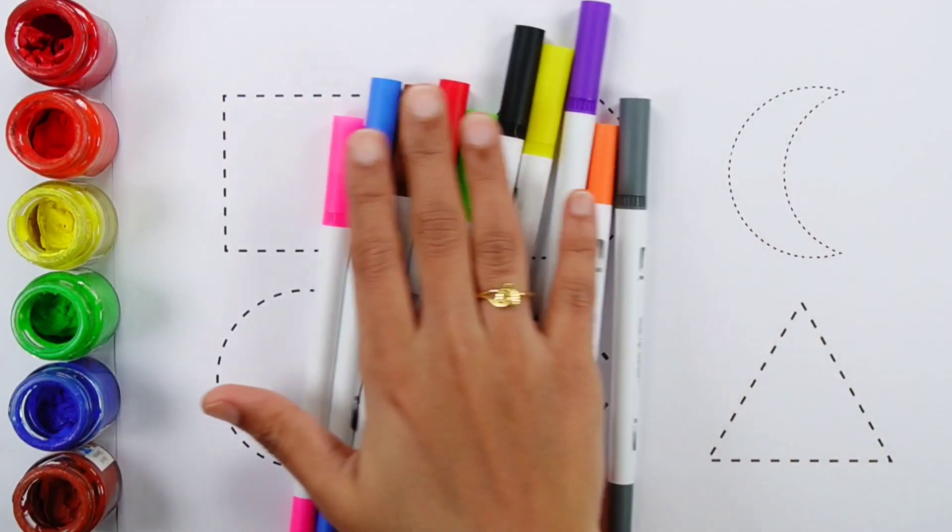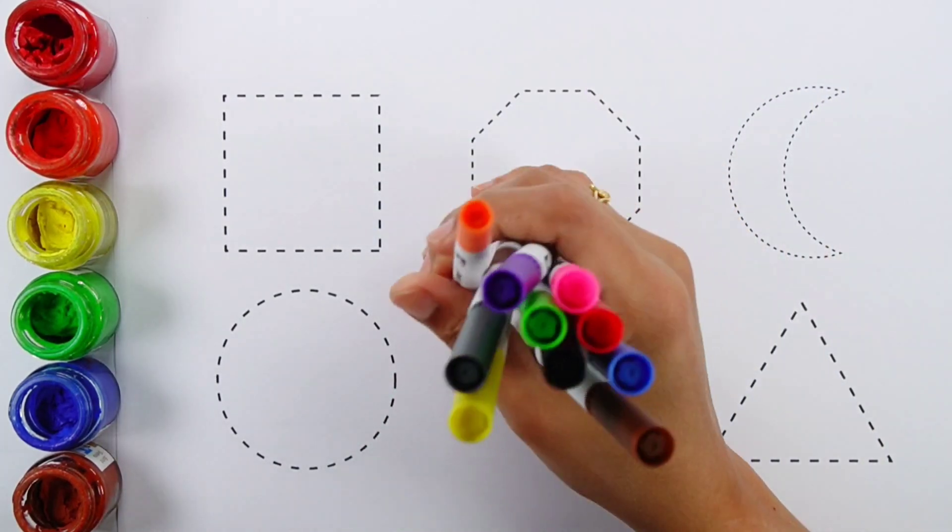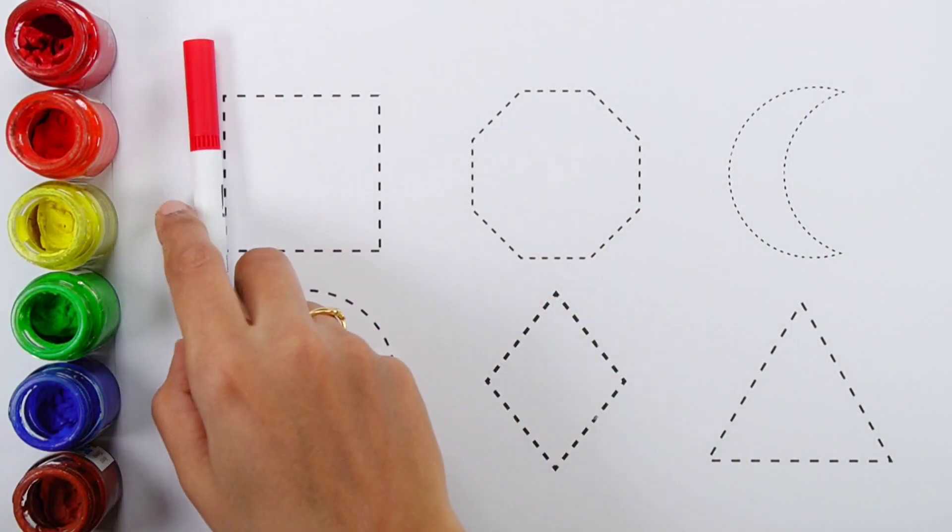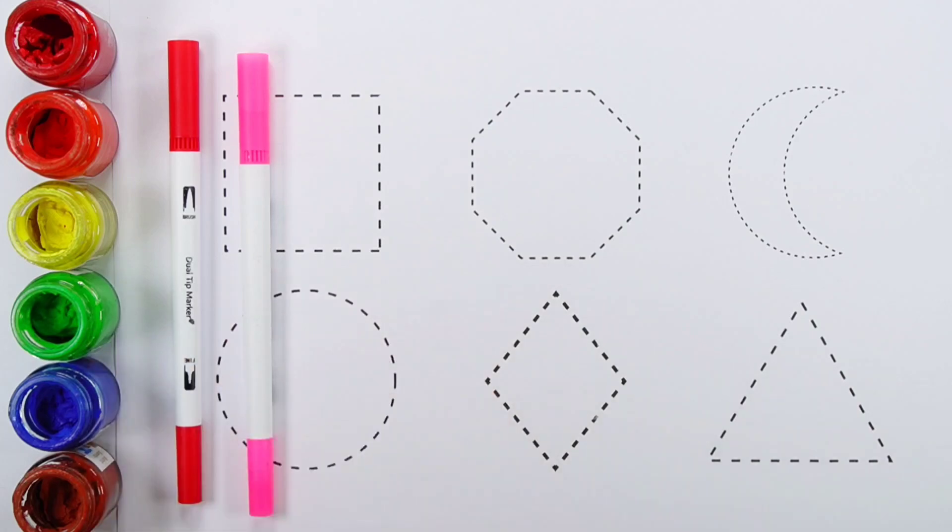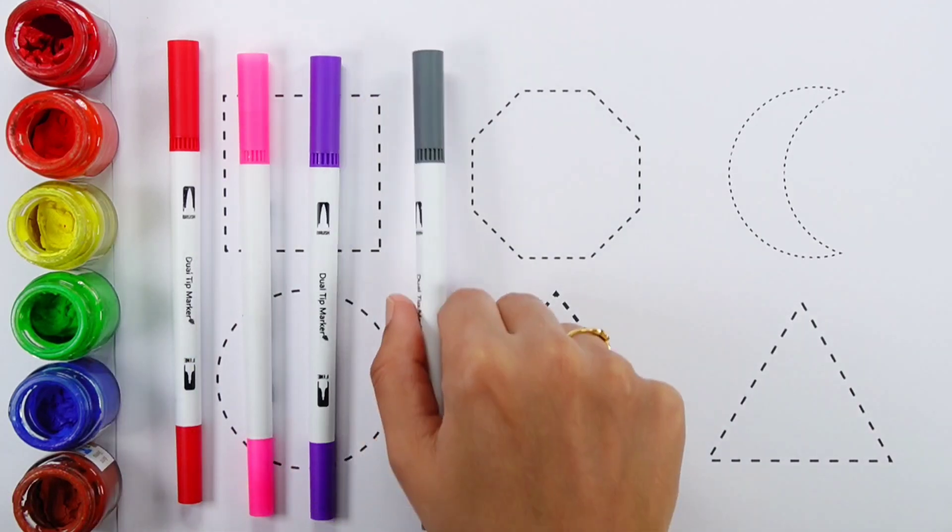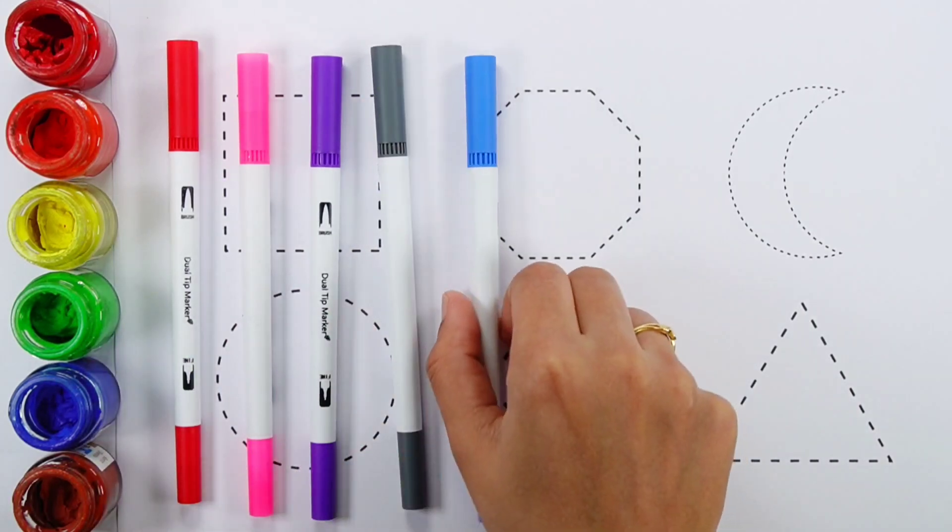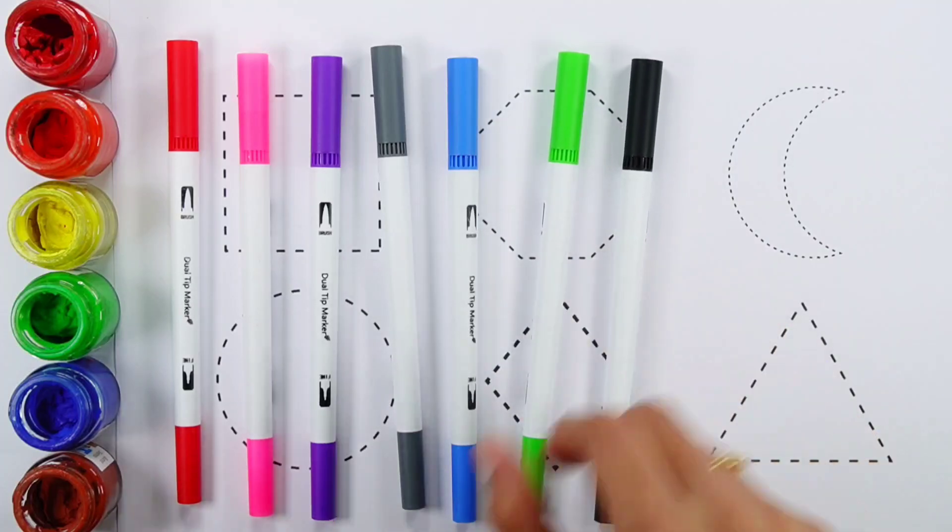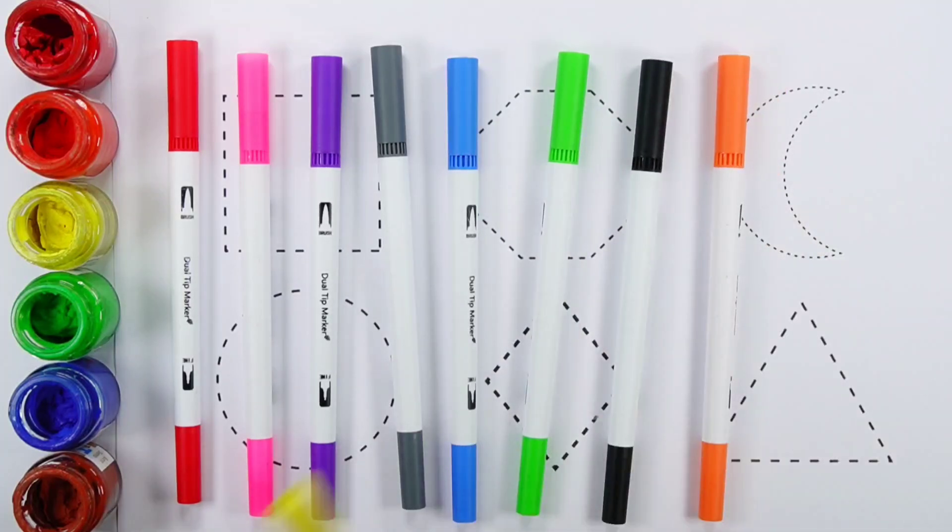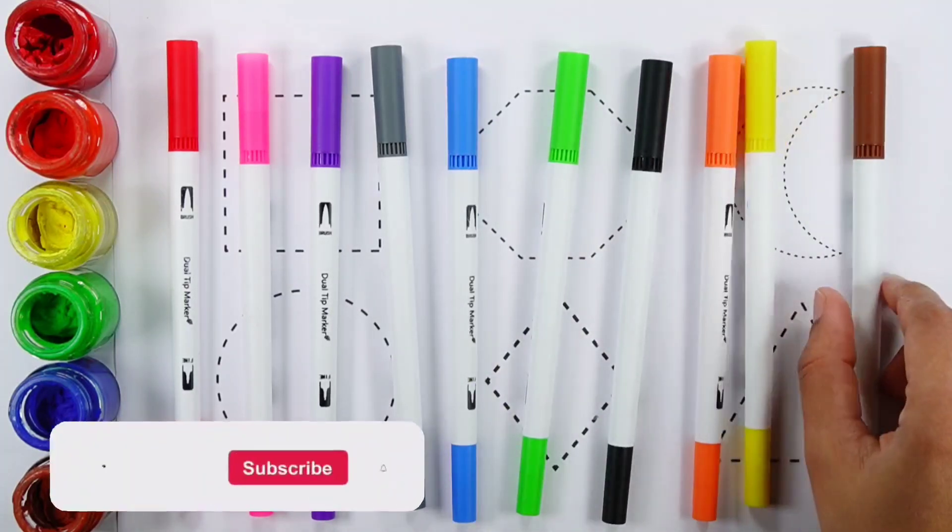Let's learn some colors. Red color, pink color, white color, gray color, blue color, green color, black color, orange color, yellow color, brown color.